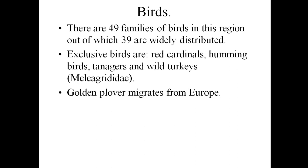If you take birds, there are 49 families of birds in this region. Out of 49, 39 have wide distribution and are present in other biogeographical regions also, but 10 are mostly endemic. The exclusive birds — endemic to this biogeographical realm — are especially the Red Cardinals, Hummingbirds, Tanagers, and even the Wild Turkey. They are exclusive to this Nearctic region.